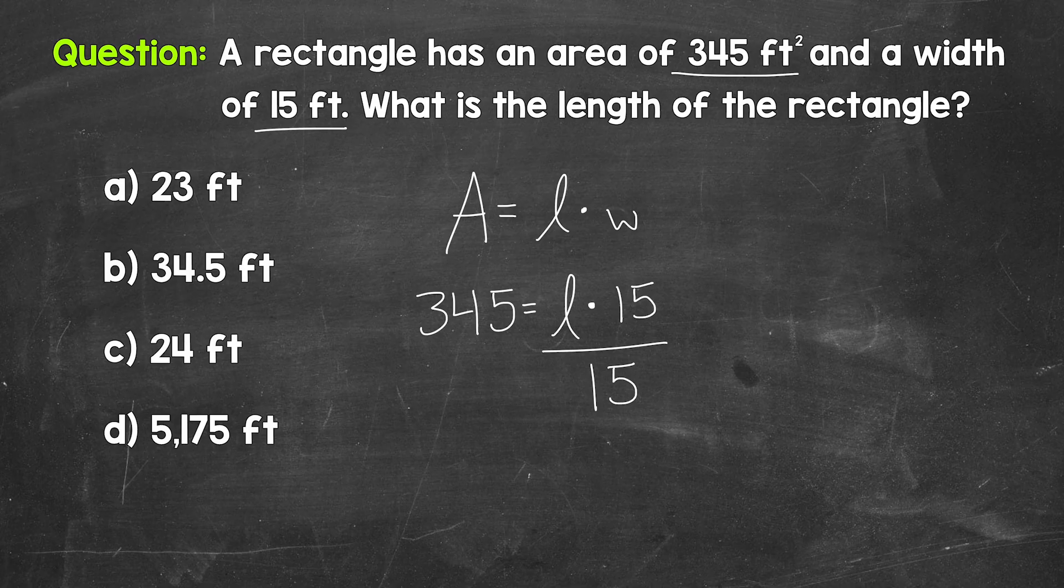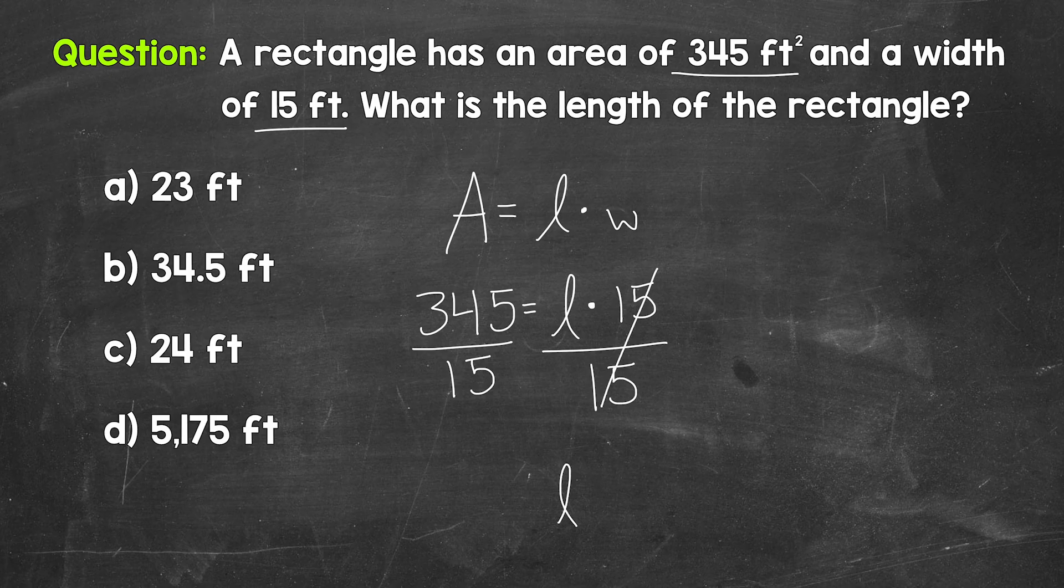Remember, whatever we do to one side of an equation, we must do to the other. So divide the left side by 15 as well. The 15s on the right side of the equation cancel each other out. So L is now isolated equals. And then on the left side of the equation, we have 345 divided by 15. So we need to figure that out. Let's divide by hand over to the side here.